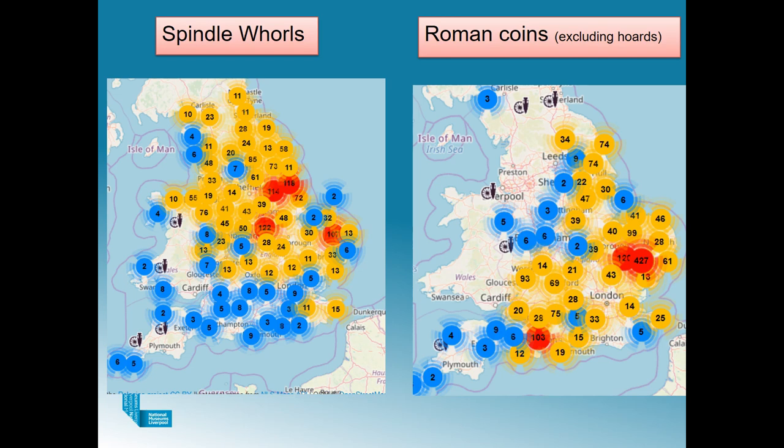Spindle whorls are all in double figures for the north of the country, and the coins — the north-west looks quite barren. So it's important when looking at the data to consider why that is, and that there are other conclusions we're not necessarily thinking of when we just have a quick look — we need to dig a bit deeper.